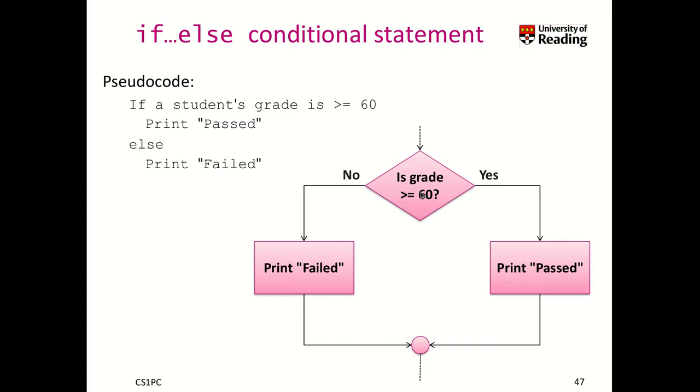Here we see the flow diagram for an if-else conditional statement. We do a check - is the grade bigger than or equal to 60? Yes, we go in this branch, otherwise we go into the else branch. At the end, both branches continue with normal sequential processing of the code.